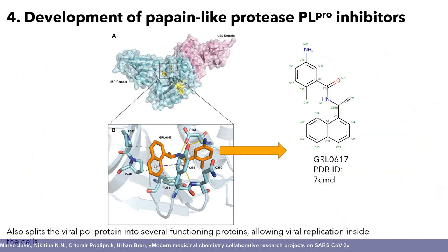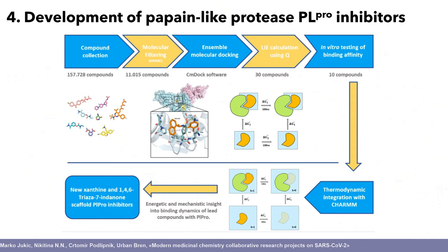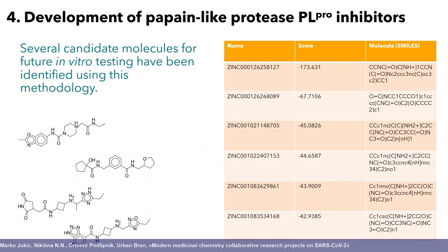Here I will touch upon another target — the papain-like protease, PL-Pro. Again, we are searching for novel inhibitors. This protein also splits viral polyproteins into several functioning proteins that allow viral replication. We start with a huge collection of compounds and go through various docking steps and in silico simulations to identify compounds that can be potential binders, and we arrived at novel chemical matter that can be used for future drug research.